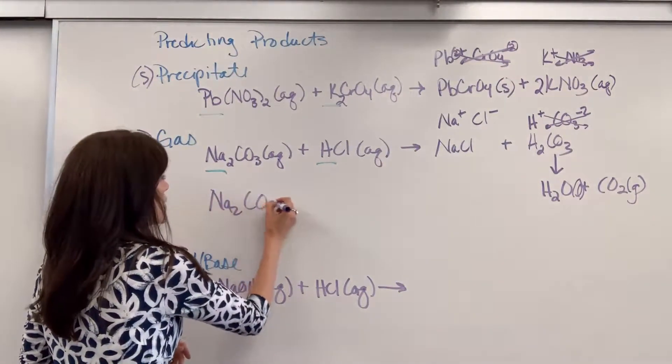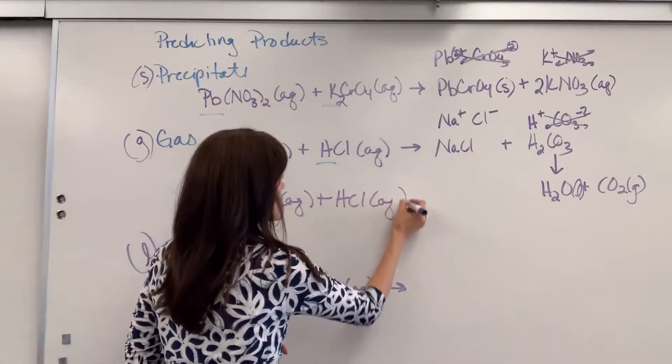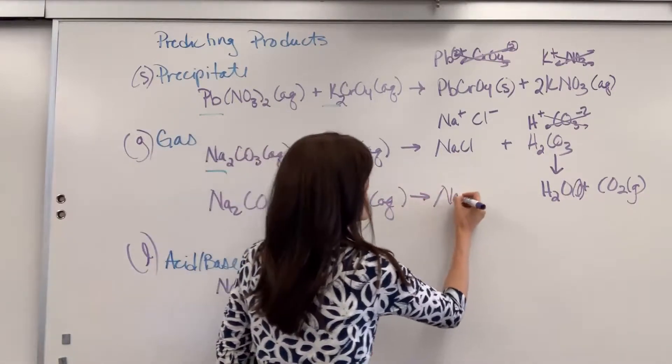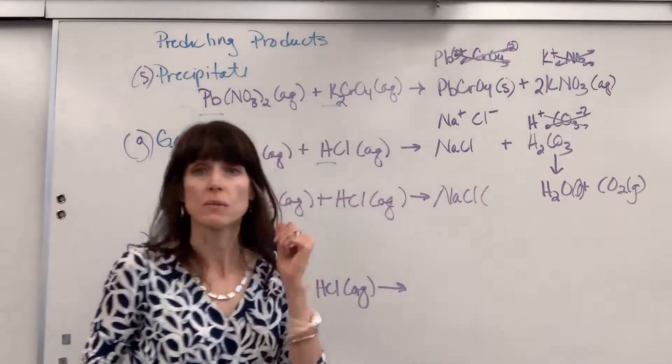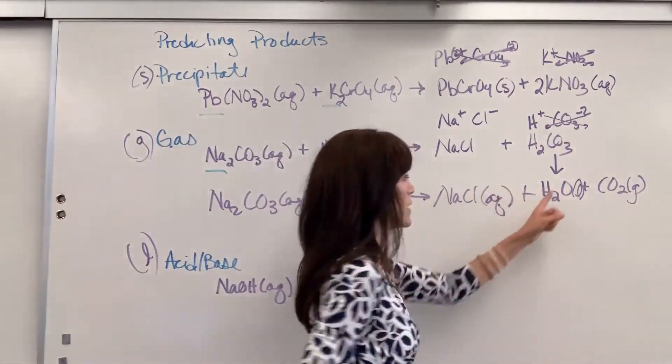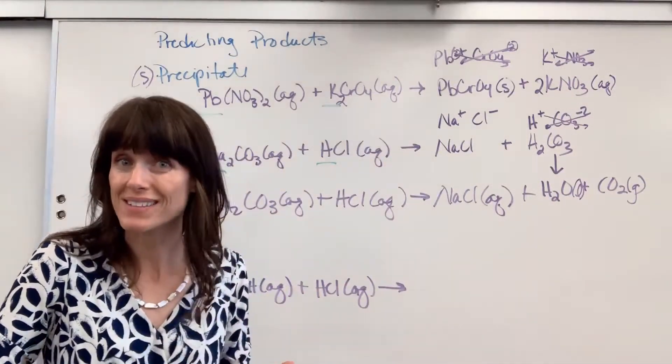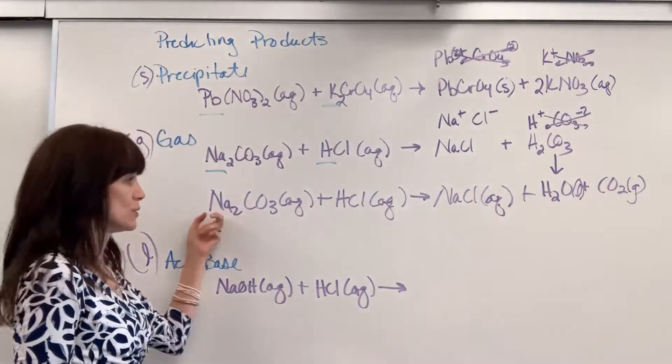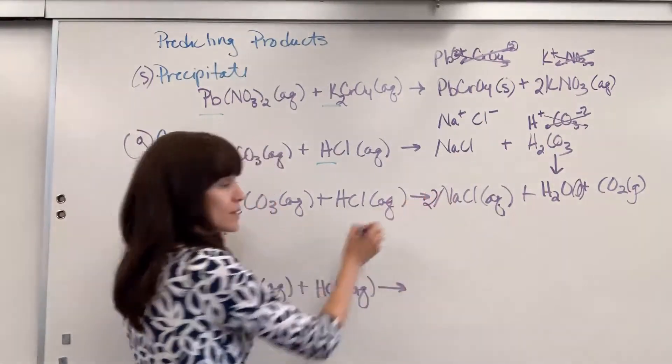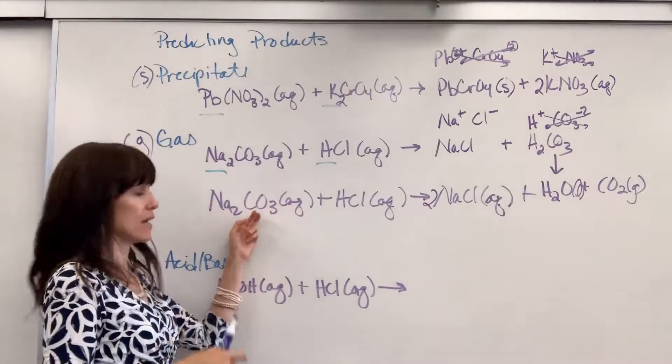We have sodium carbonate plus hydrochloric acid yield sodium chloride. Sodium is always soluble. So, we make that aqueous plus the water plus the CO2. I am missing one thing though. I haven't balanced this. So, let's go back and balance. Two sodiums. Oh, two sodiums right there. One carbonate. Well, let's actually count atoms.